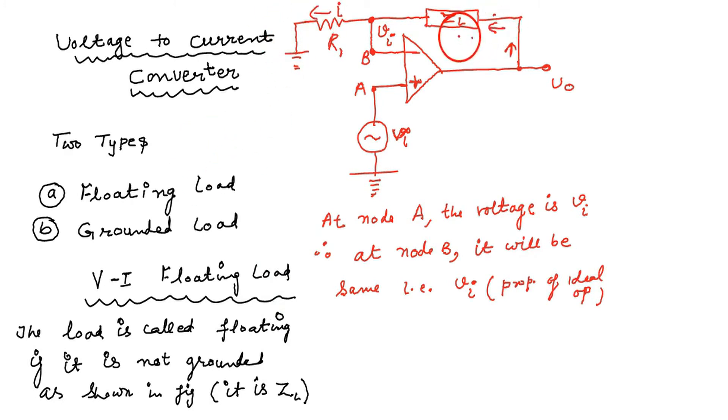Then here the current flowing is IL through load. The whole of the current will pass through R1, because op-amp never draws any current. Input current of the op-amp is always 0, that IB minus is 0. Therefore the load current will pass through R1. Load current is IL, it is passing through ZL as well as R1.